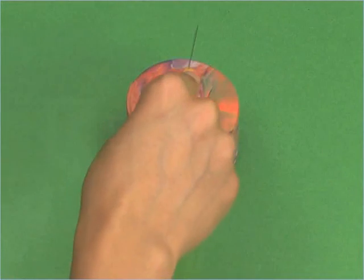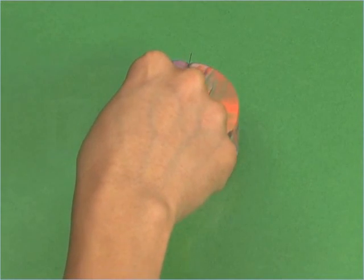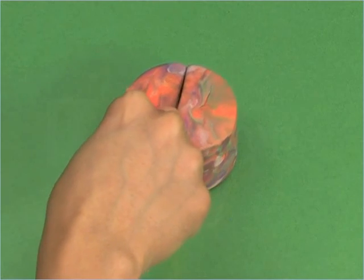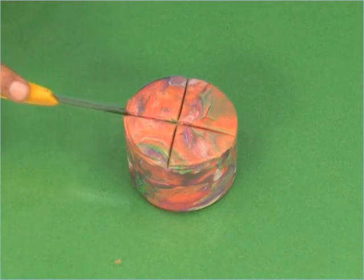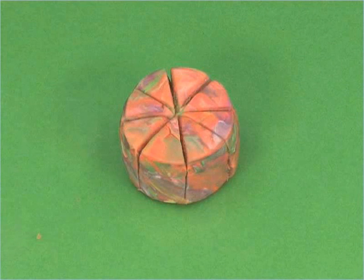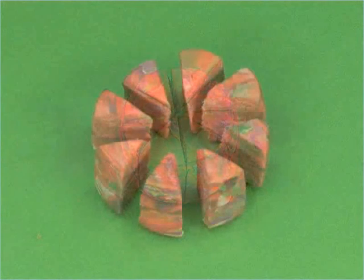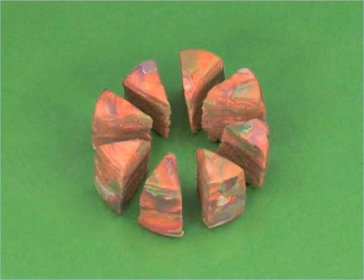Use the cutter to cut the cylinder into 8 equal parts, so that its base is also divided into 8 equal sectors.